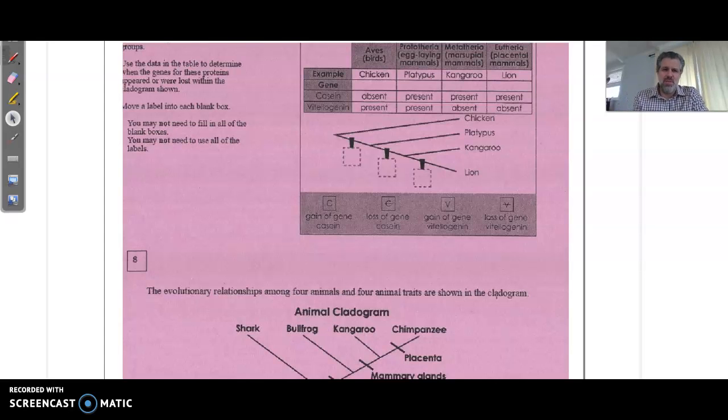Hey, let's do some purple sheets. I don't know if they're purple for you guys or not, but let's do these sheets. This has a chicken, the platypus, the kangaroo, and the lion on it. So we're talking about the loss and the gain of different genes as time goes on. This one's a bit weird in terms of its orientation for this cladogram - kind of goes from the upper left down to lower right for that lion being the most advanced organism on this cladogram.